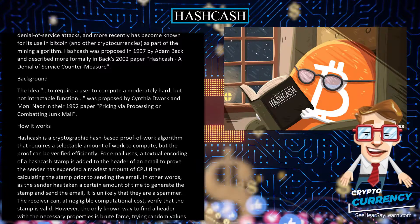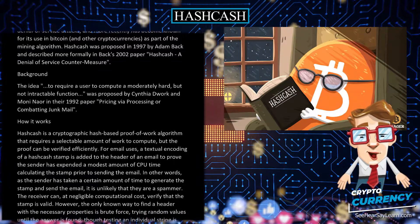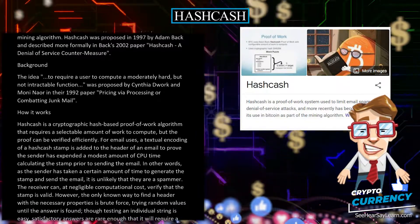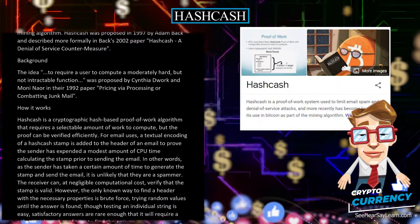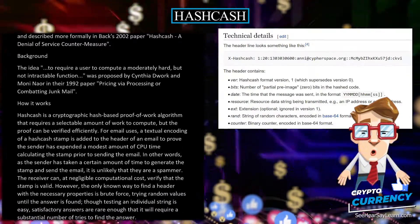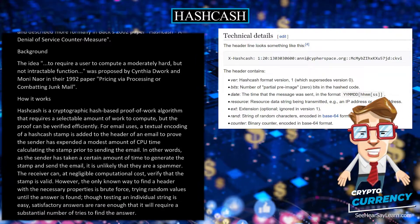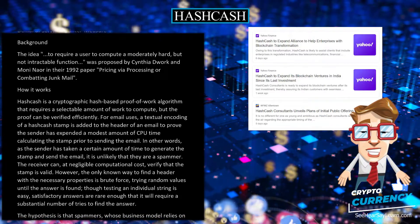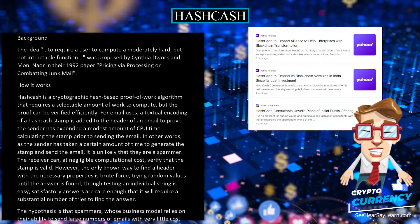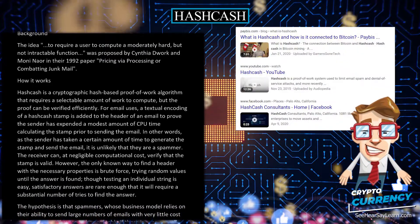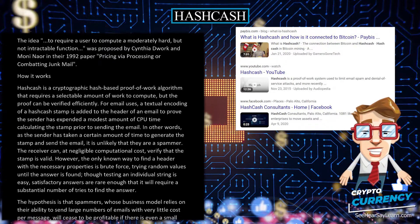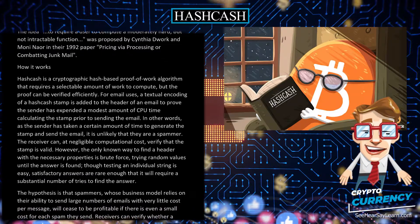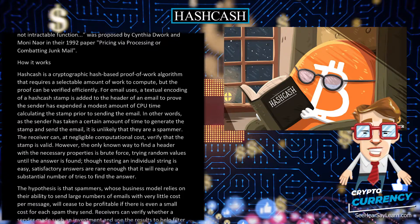Hashcash is a cryptographic hash-based proof-of-work algorithm that requires a selectable amount of work to compute, but the proof can be verified efficiently. For email uses, a textual encoding of a hashcash stamp is added to the header of an email to prove the sender has expended a modest amount of CPU time calculating the stamp prior to sending. As the sender has taken a certain amount of time to generate the stamp and send the email, it is unlikely that they are a spammer.